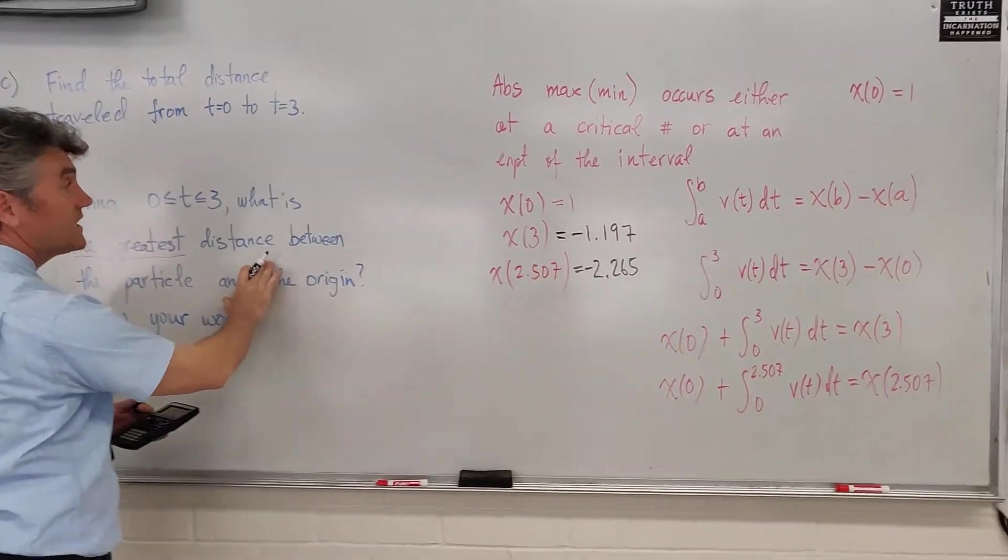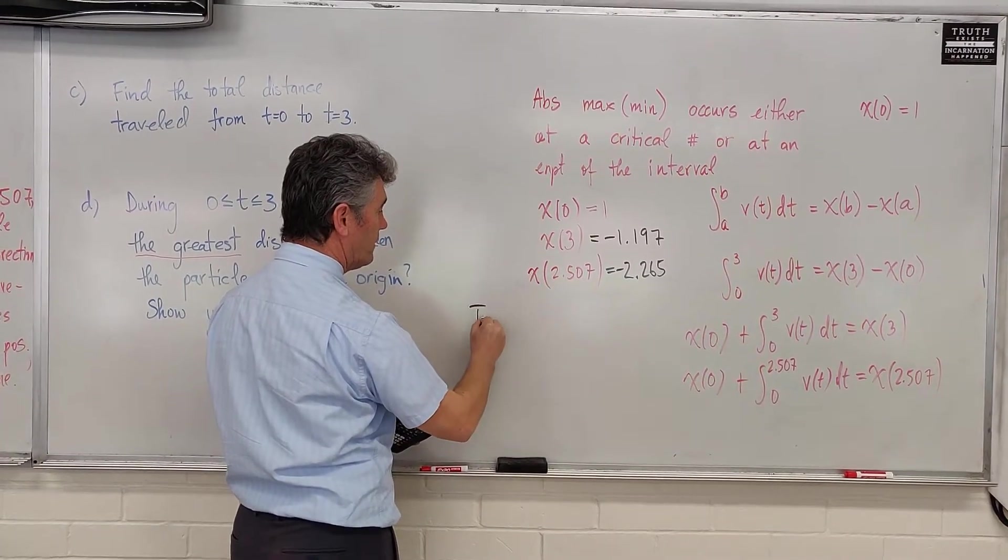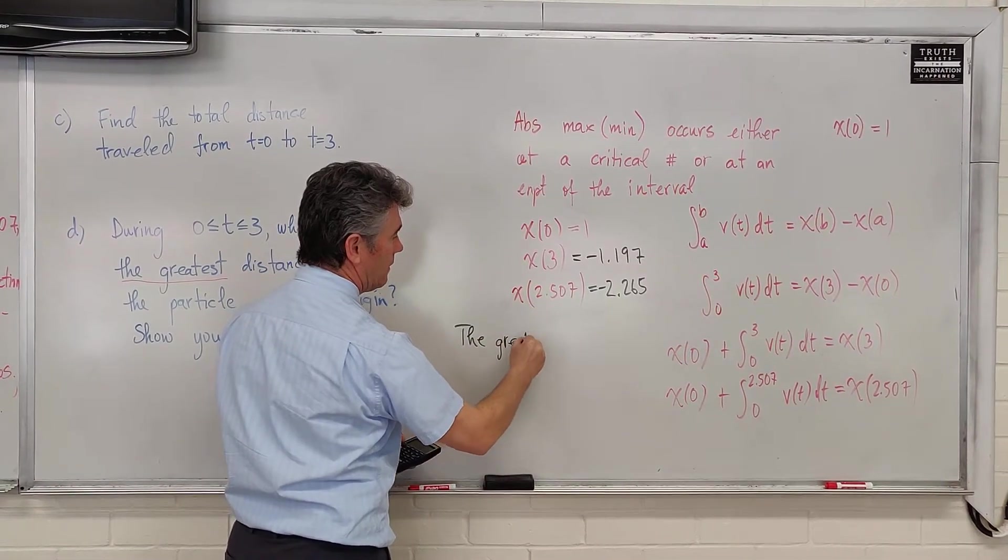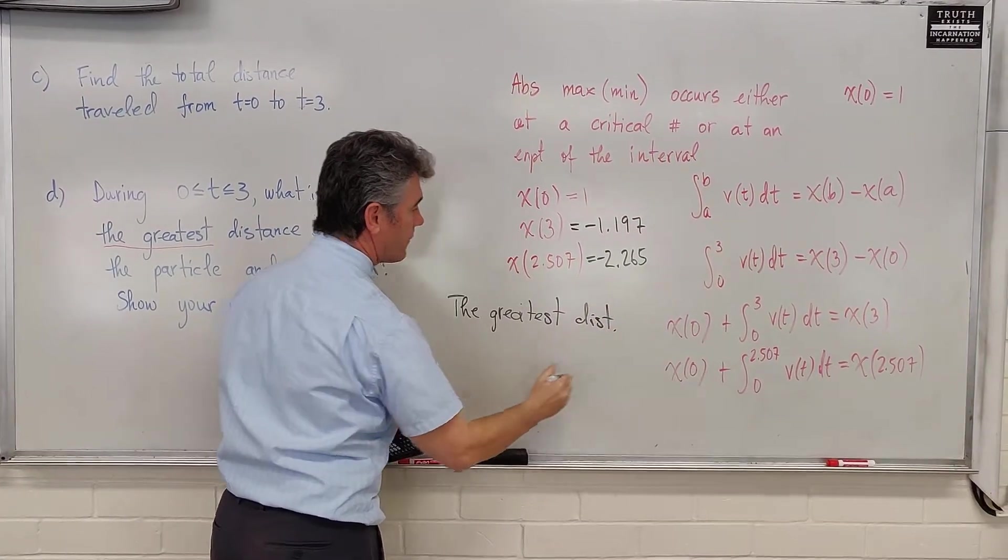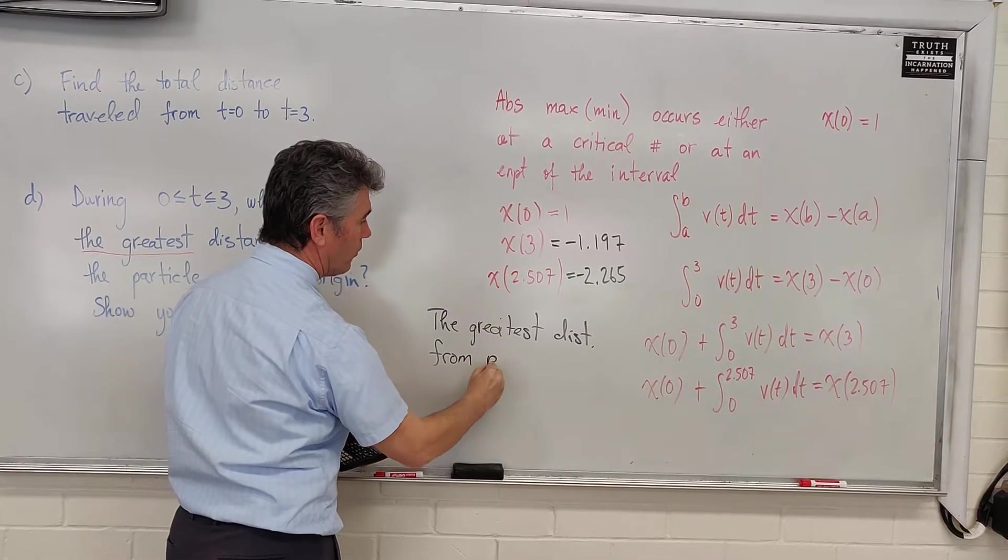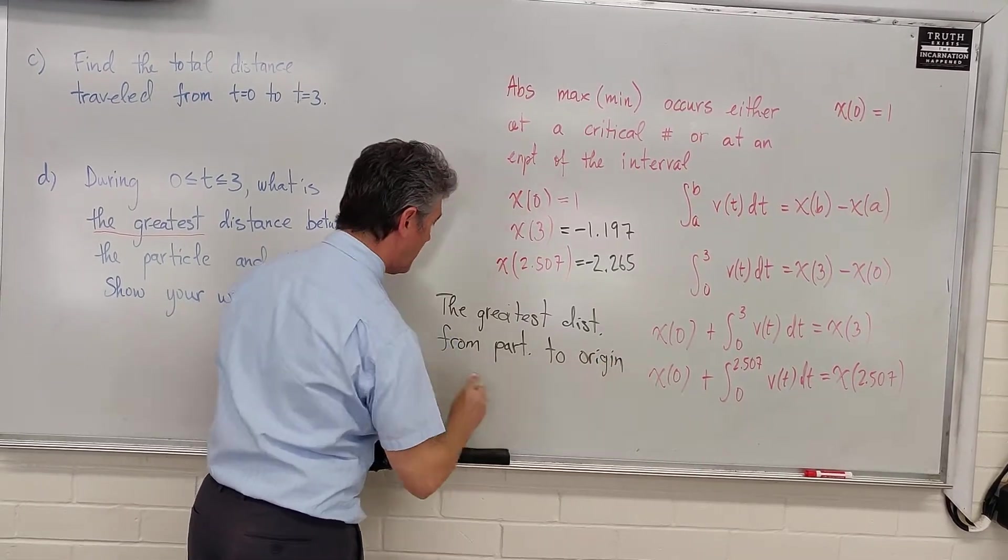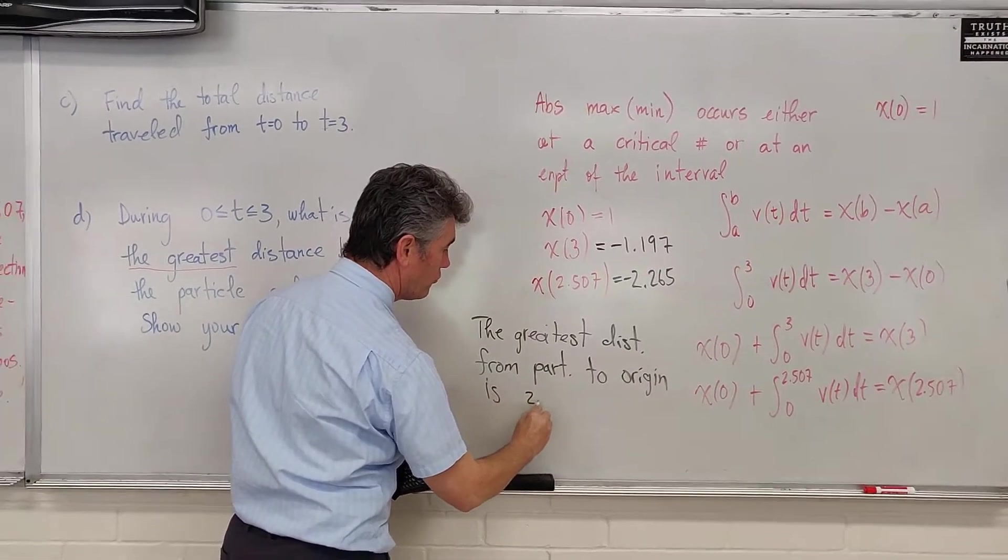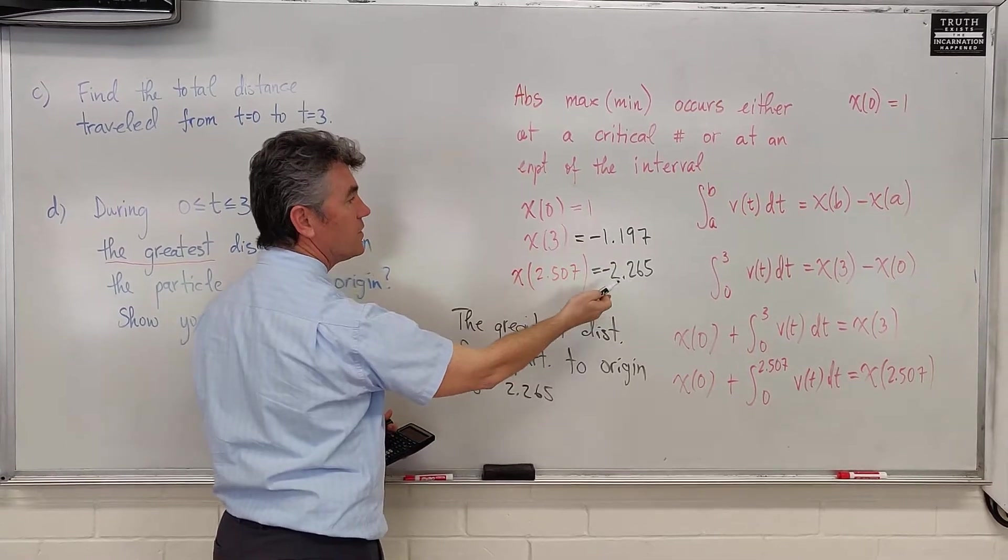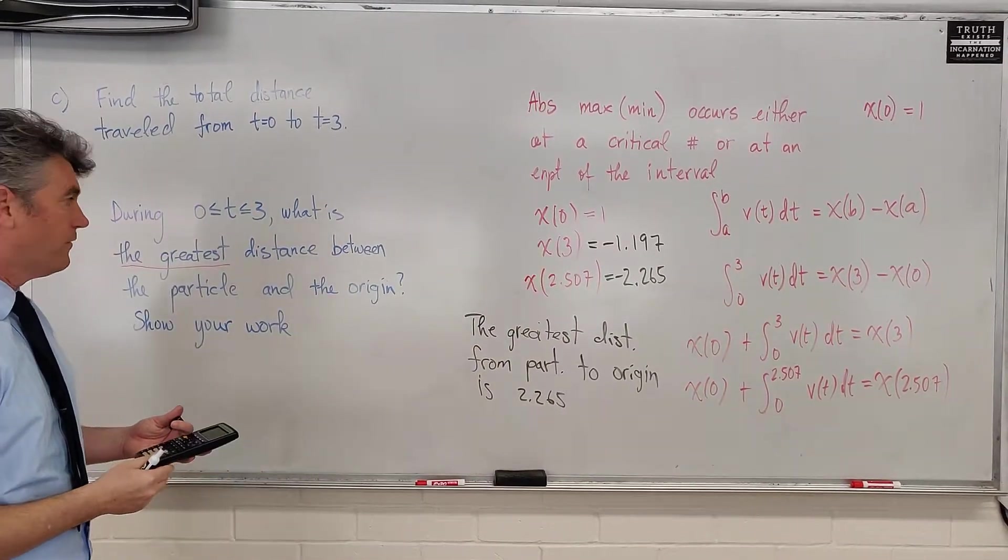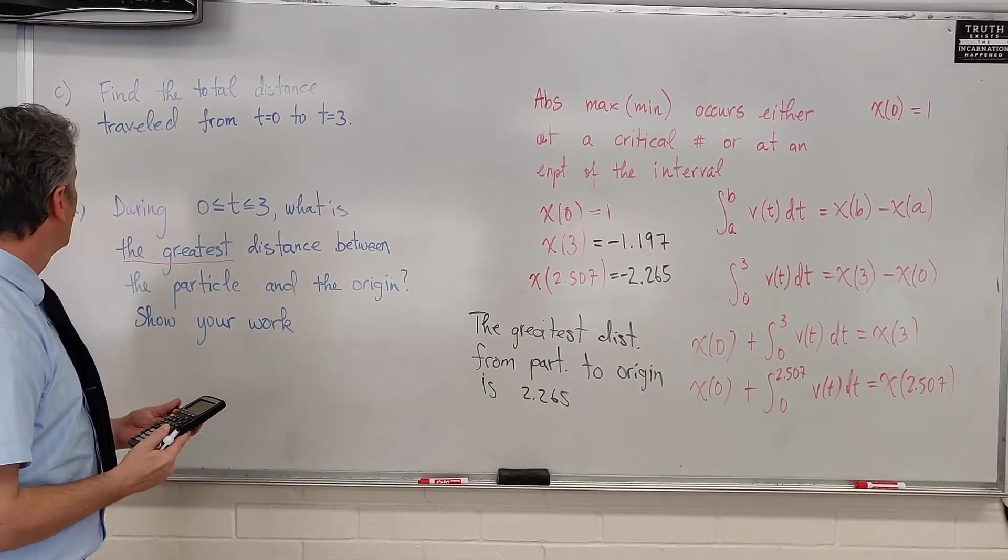What is the greatest distance between the particle and the origin? The greatest distance from particle to origin is 2.265. At this time, the particle is 2.265 units to the left of the origin. We show our work. We explain everything. We are done with part D.